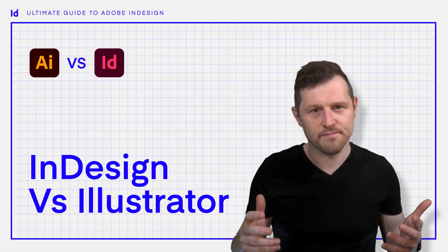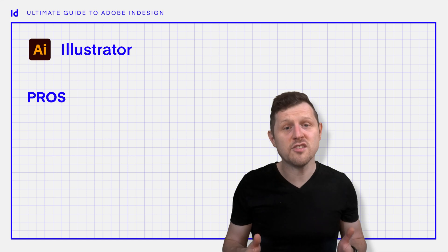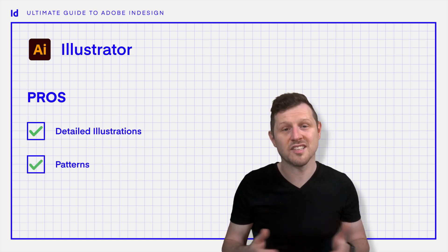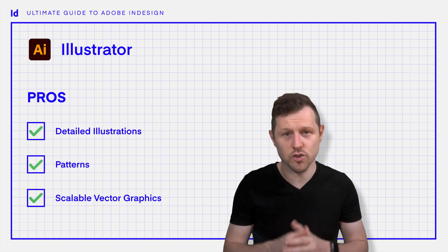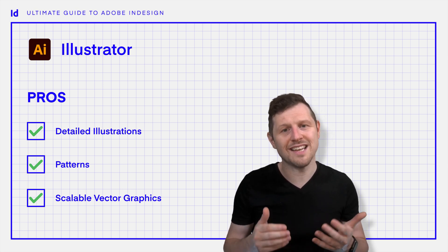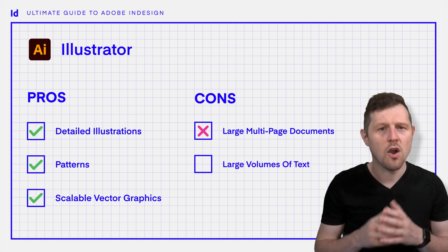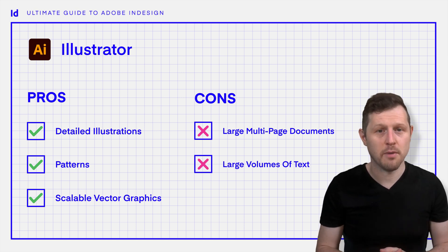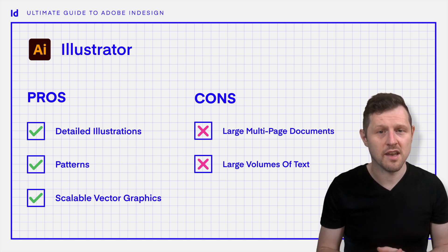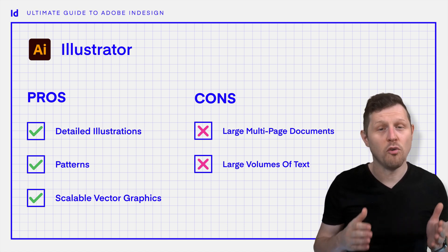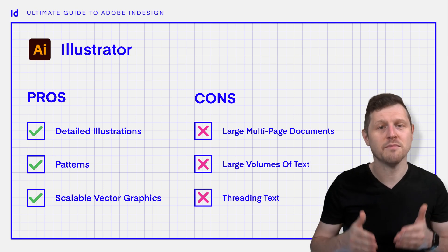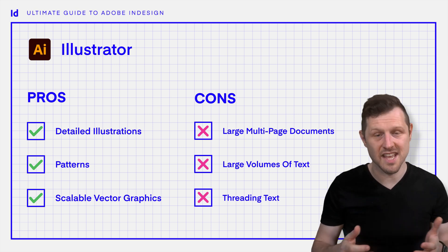Now let's talk about Illustrator. Illustrator is fantastic for creating vector graphics like logos, icons, and illustrations. If you need to create detailed illustrations, patterns, or scalable graphics, Illustrator is your tool. But here's the thing — Illustrator isn't designed to handle long documents or a lot of text. While you can technically create brochures, posters, and business cards in Illustrator, managing text across multiple pages, applying consistent styles, or flowing text across linked frames becomes much more complicated than in InDesign.